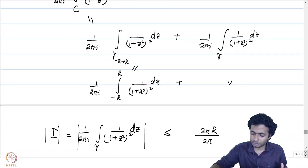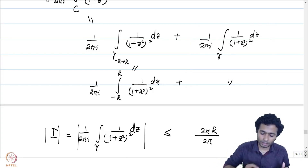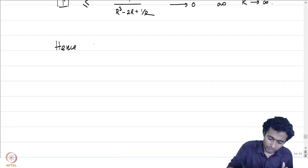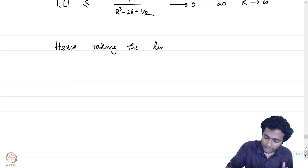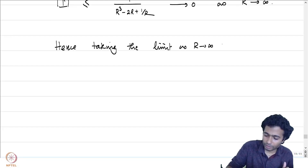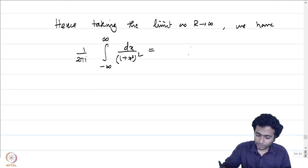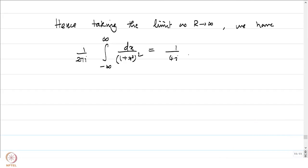The arc integral vanishes as R → ∞ and does not contribute. Taking the limit as R → ∞, we have (1/2πi) times the integral from −∞ to ∞ of dx/(1 + x²)² equals 1/(4i). Hence (1/2) times the full integral equals π/4, giving us the answer: the integral from 0 to ∞ of dx/(1 + x²)² equals π/4.